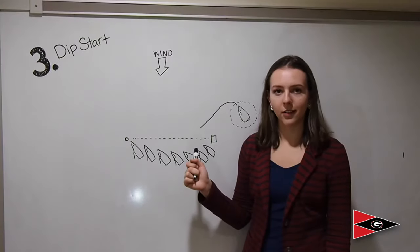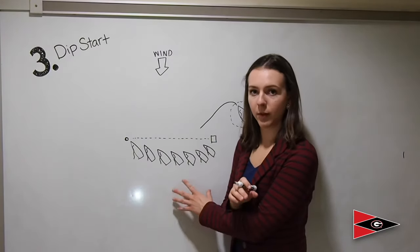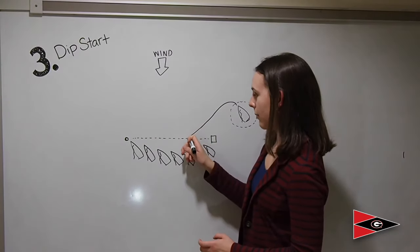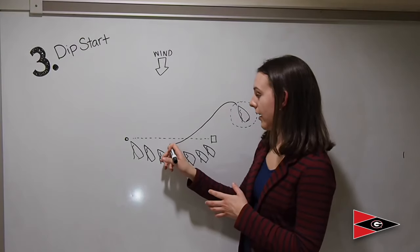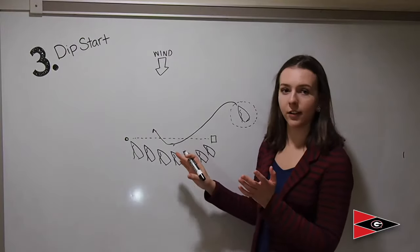You come in from this angle and come above the line. The rule book states that you must be on the pre-start side of the course before go and at go. So all you have to do is make sure that you get below the start, then they can call go right here, and you just turn back up and you are automatically on top of everyone.